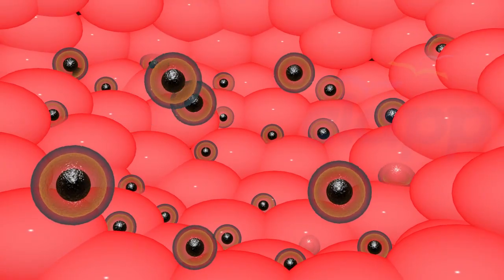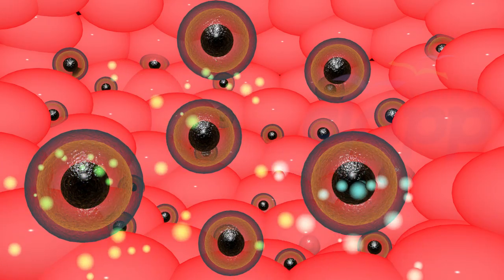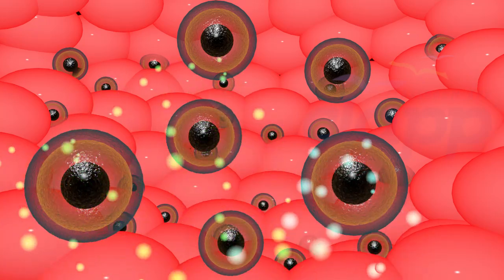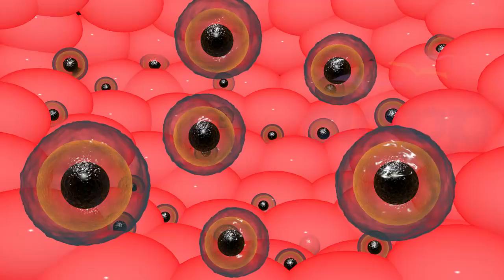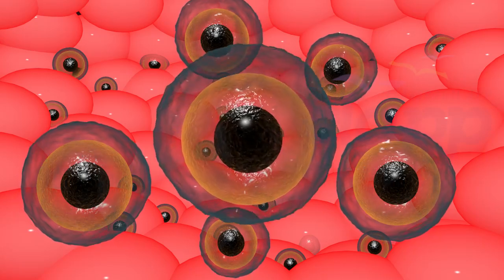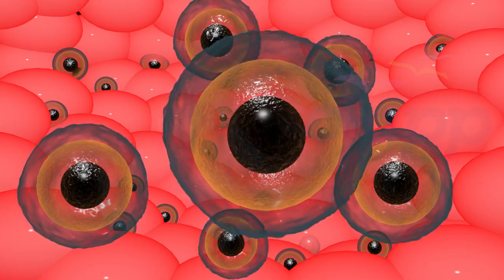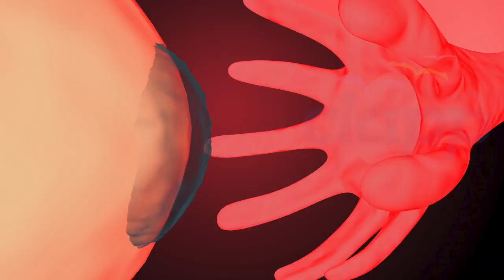These hormones cause about 6 to 12 follicles to wake up and start to mature. As they mature, they release estrogen hormone, and cause the lining of the uterus to begin to build up. Then one of those follicles tends to grow a little faster and becomes dominant. This dominant follicle moves to the edge of the ovary to produce an egg.